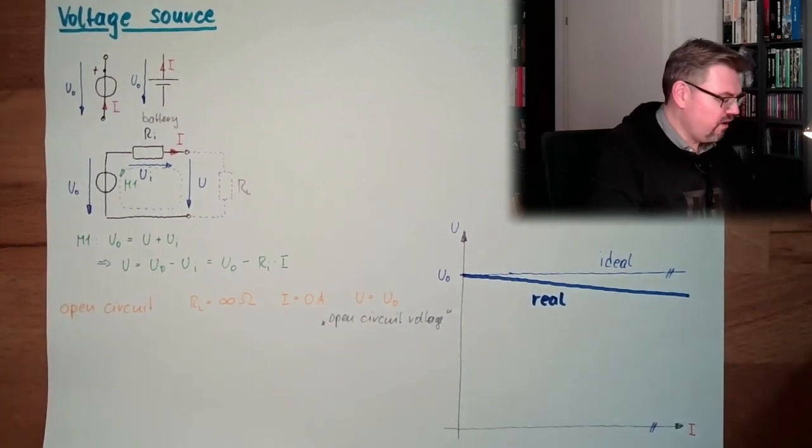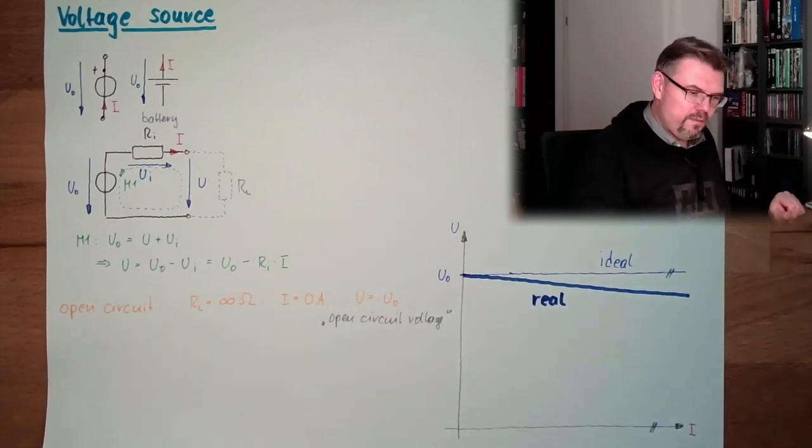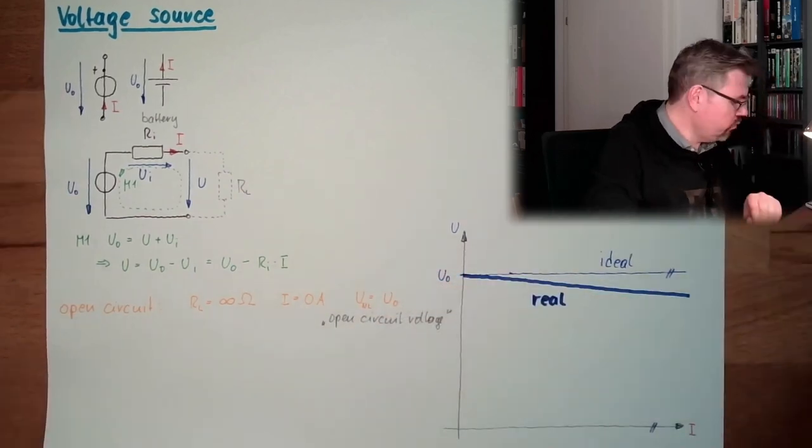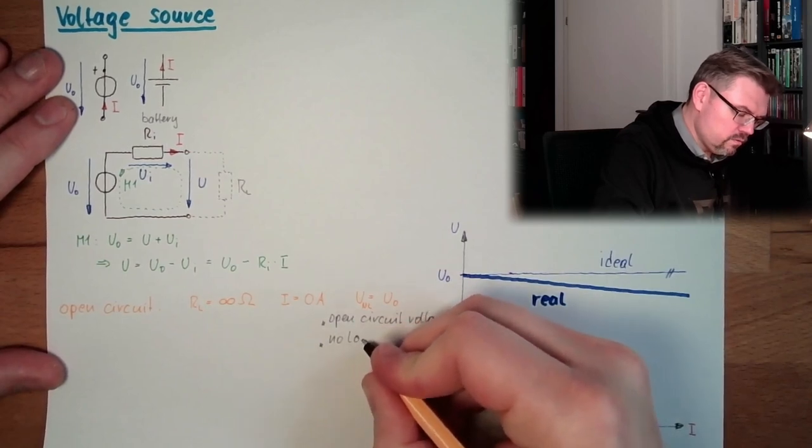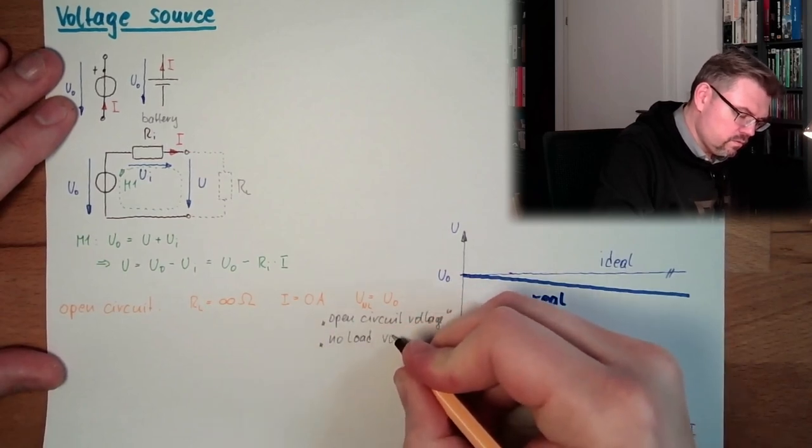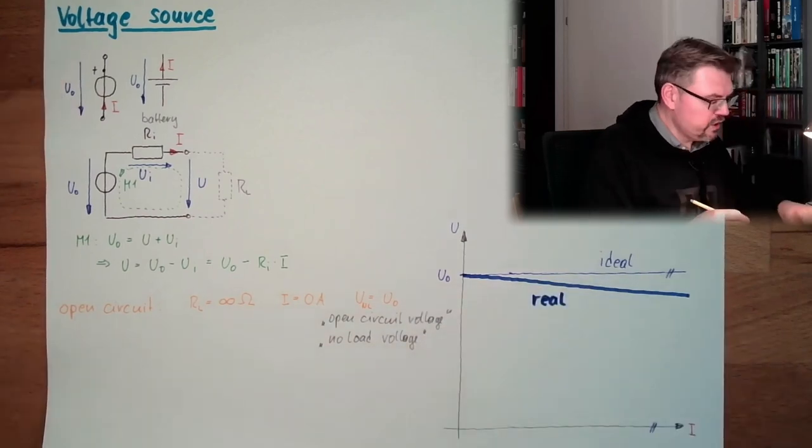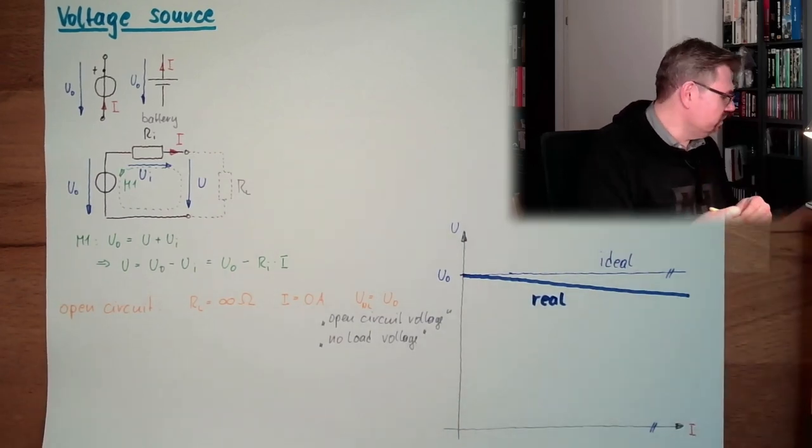This is the open circuit voltage. Open circuit. In German, it's Leerlauf. Maybe we could write no load, NL. No load voltage. Or also no load voltage. And the no load voltage is the voltage of the power source. The voltage source inside.